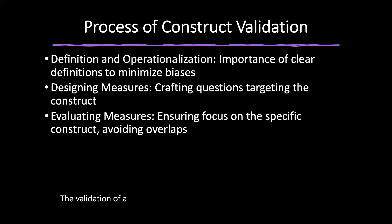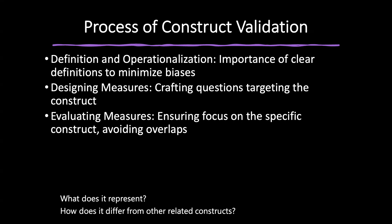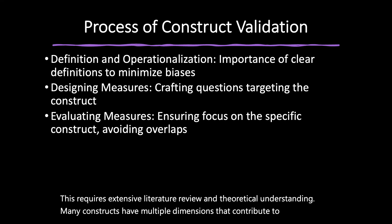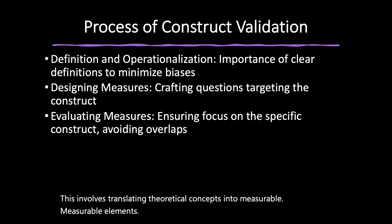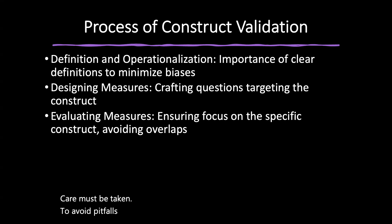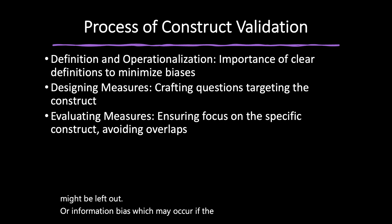The validation of a construct is a complex and critical process involving several key steps. It begins with a clear and specific definition of the construct — what does it represent, and how does it differ from related constructs? This requires extensive literature review and theoretical understanding. Many constructs have multiple dimensions, and identifying these helps understand the multifaceted nature of the construct. Operationalization involves translating theoretical concepts into measurable elements and selecting instruments or scales, while avoiding pitfalls such as omitted variable bias or information bias.